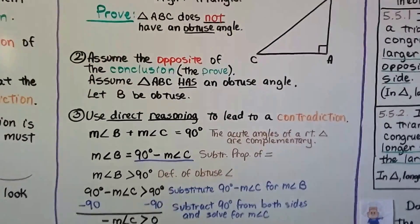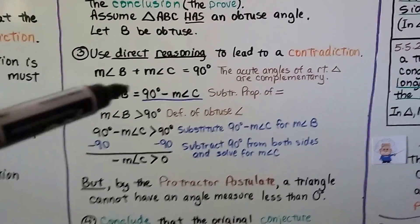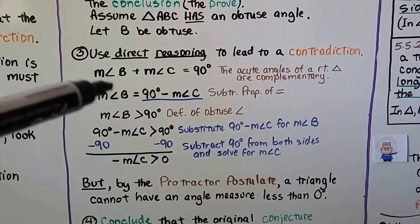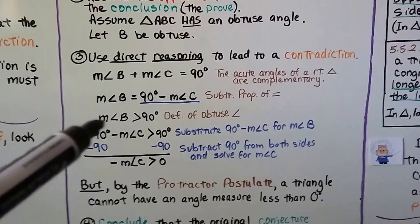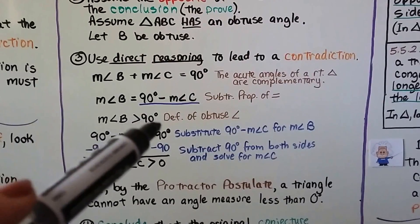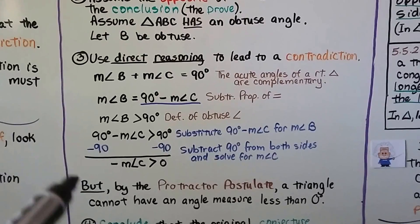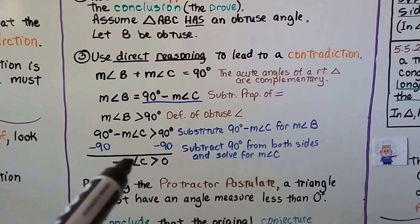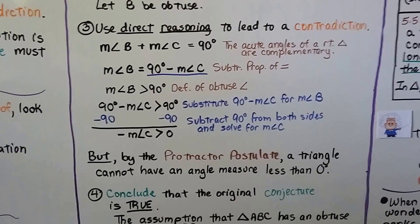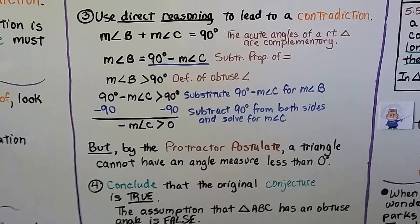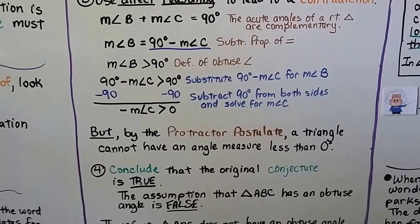So we're assuming angle B is obtuse, meaning it has to be greater than 90. We can substitute: 90 degrees minus the measure of angle C is greater than 90 degrees. When we subtract 90 from each side of the inequality, we end up with a negative measure of angle C is greater than 0. Well, measures can't be negative. And by the protractor postulate, a triangle cannot have an angle measure less than 0. We conclude that the original conjecture is true.